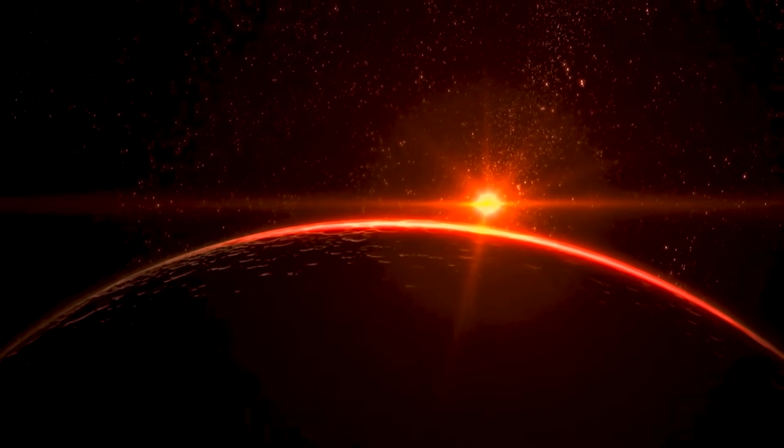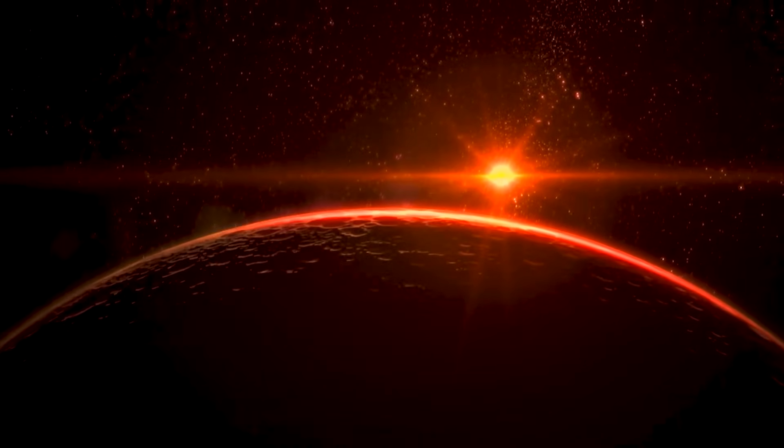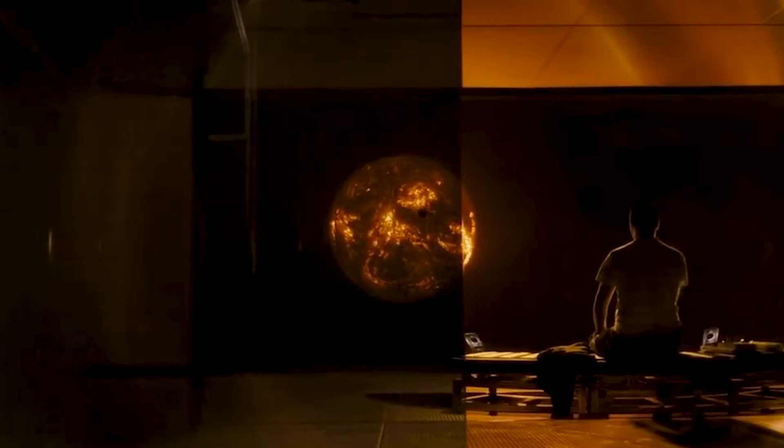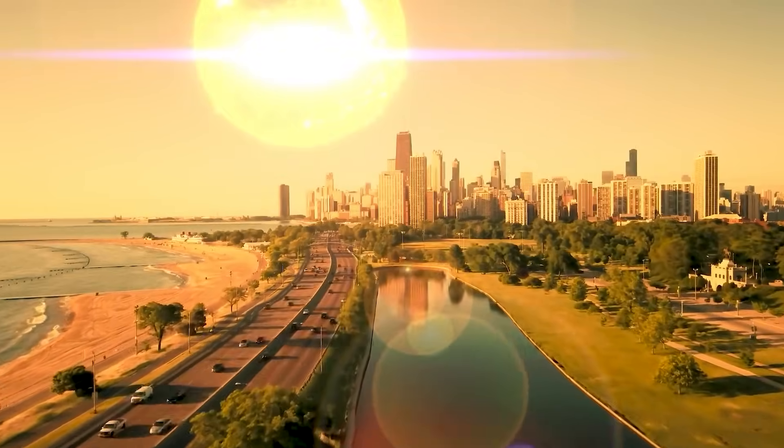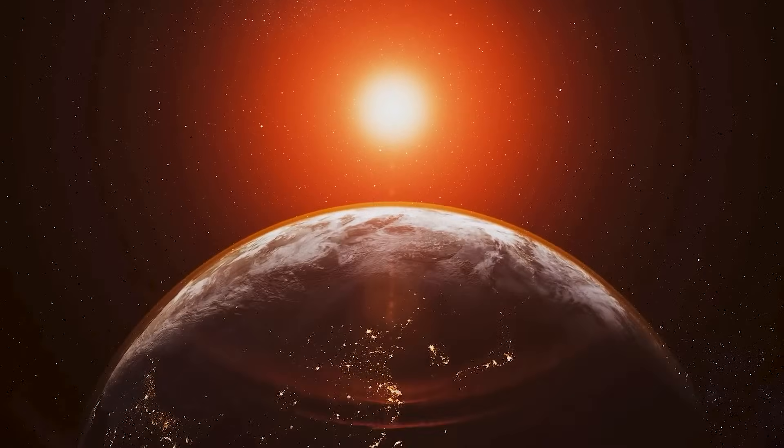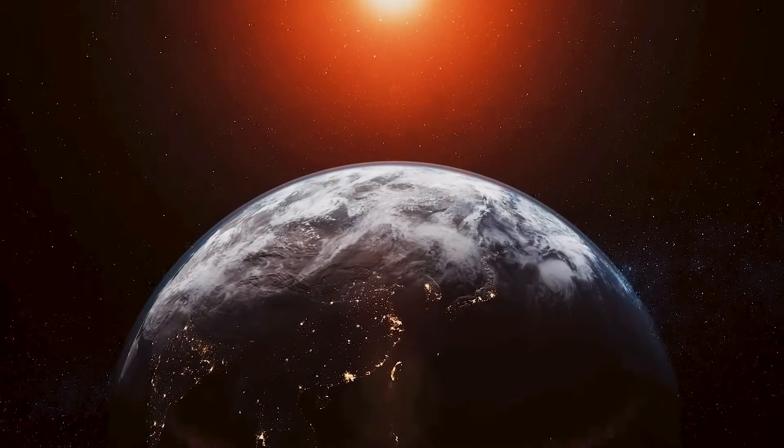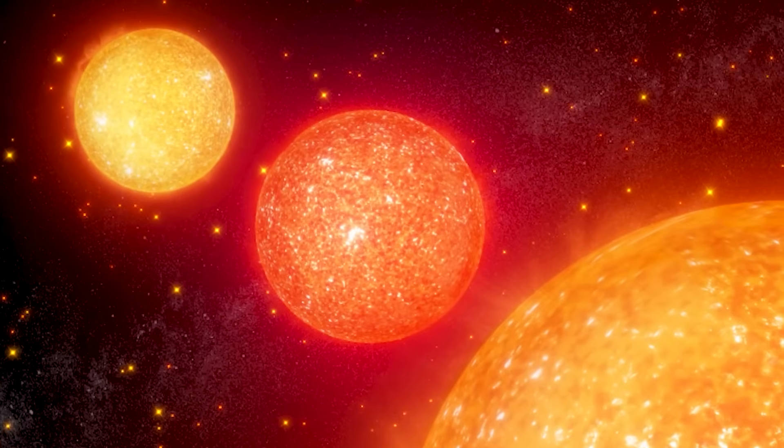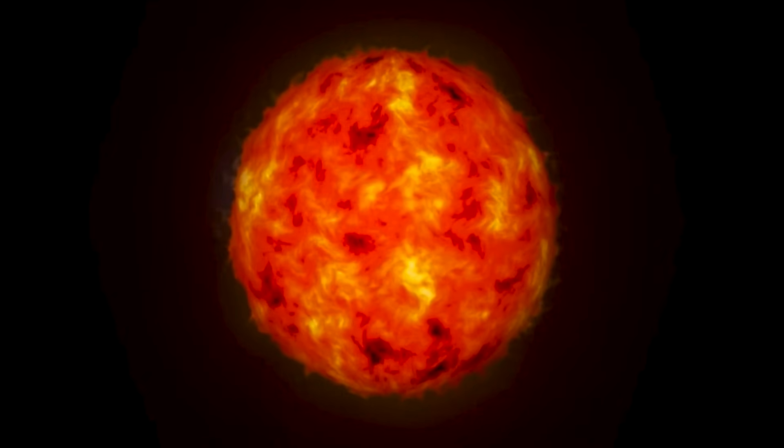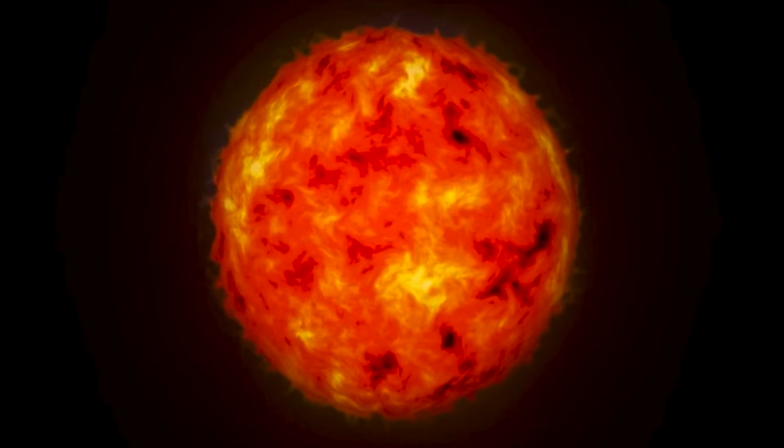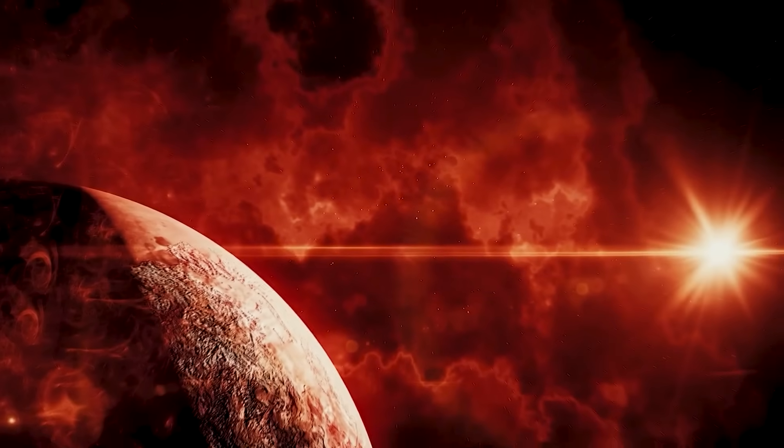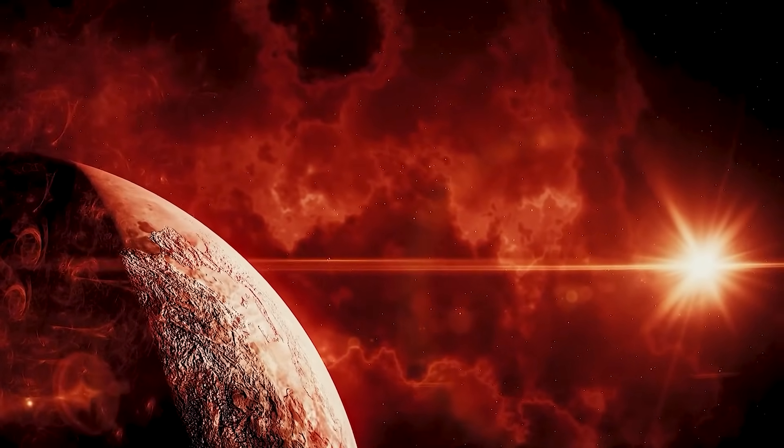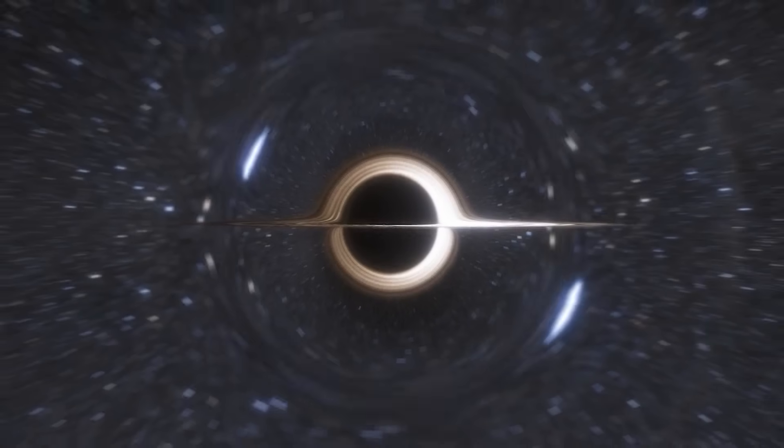You may have heard of red giants, stars that grow bigger and redder when they die. Our sun will become one of them someday. It will expand so much that it will reach the orbit of the Earth. But red giants are only for stars that are not very massive, like the sun or smaller ones. Stars that are much more massive than the sun become red supergiants, or even red hypergiants when they die. These are the biggest and brightest stars in the universe, and they will end their lives as black holes.